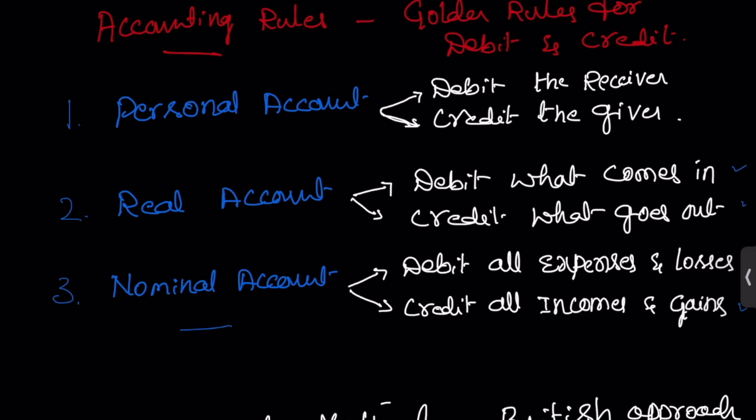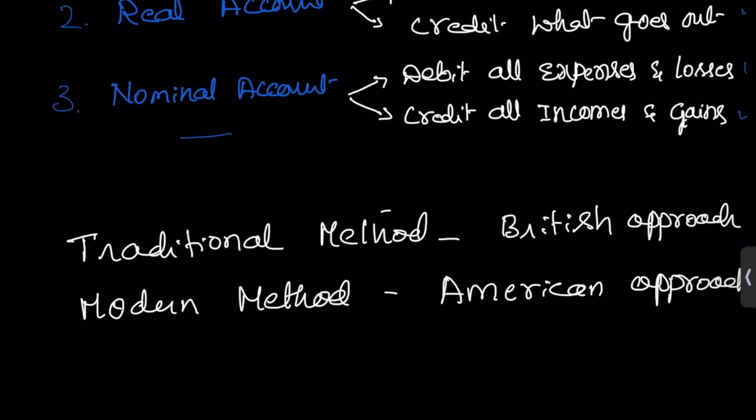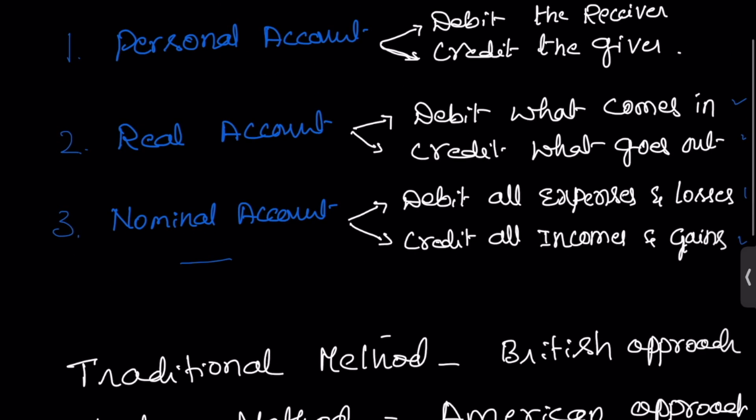We have two approaches: one is the traditional method of making accounting rules and another is the modern method. Most of the time we follow the traditional method, which is called the British approach. The other one is the modern approach, also called the American approach. Once you understand the traditional method, you will be able to analyze the American approach as well.